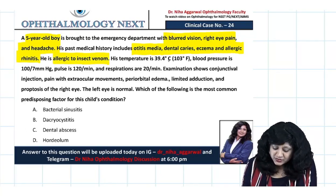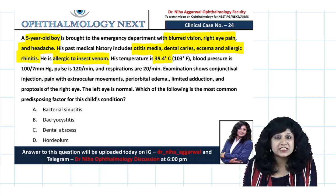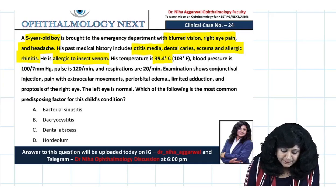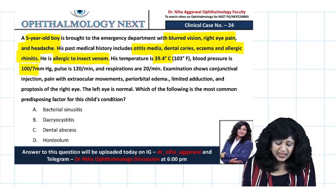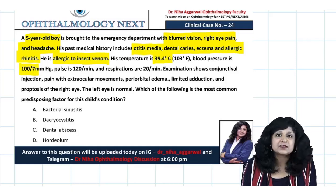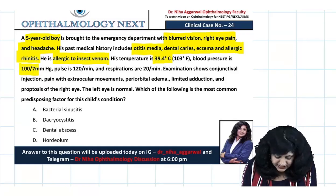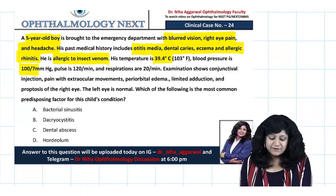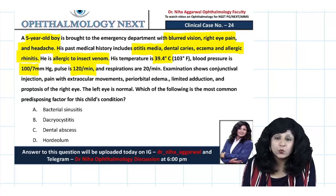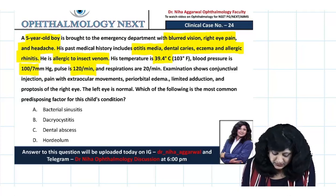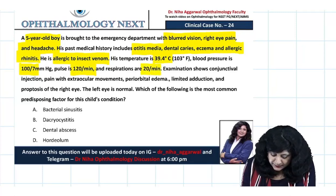His temperature is 39.4 so he is febrile. BP is somewhat low at 100/70. The pulse is high at 120 per minute, and respiration is 20 per minute.